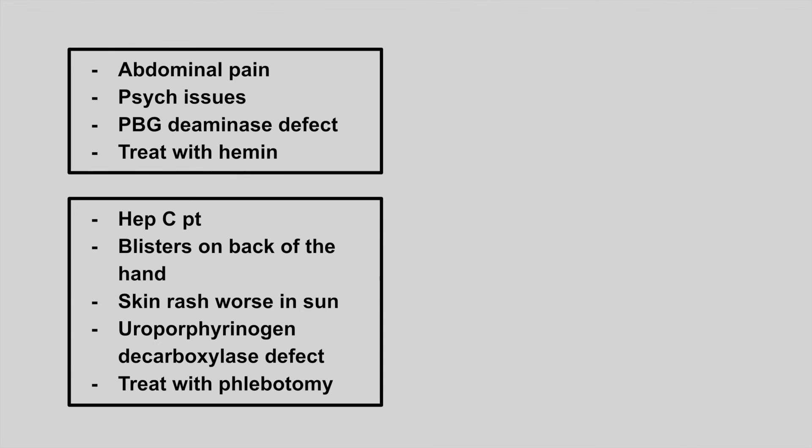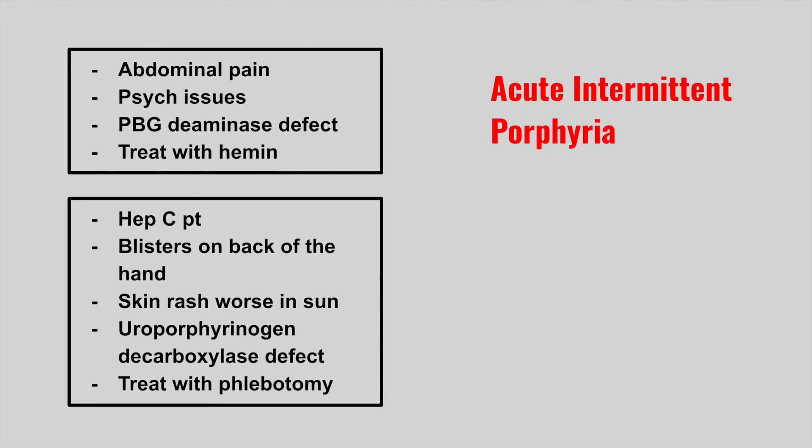Next, we have a patient who gets abdominal pain and psychiatric issues — it's a PBG deaminase defect and we treat it with hemin. This is acute intermittent porphyria.